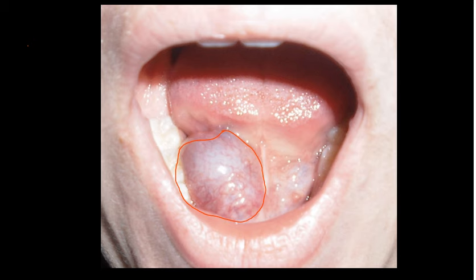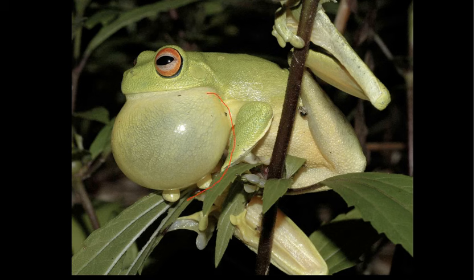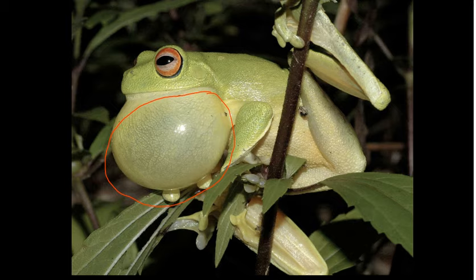The term ranula derives from the Latin rana, which means frog. You can see why when you look at this frog's vocal sac - you can see the distinct similarities to the previous image that we looked at.